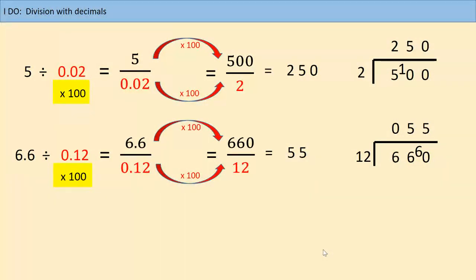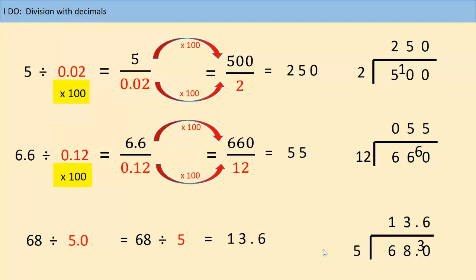Let's look at the third example, which might catch you out: 68 divided by 5.0. Now, 5.0 has one decimal place, but do I need to multiply by 10? I don't, because 5.0 is exactly the same as 5 on its own. And 68 divided by 5 we can easily do — we get the answer 13.6. So I don't have to make it any more complicated. It's okay to have a decimal on the top of my fraction — my numerator — but I must always have an integer, a whole number, that I am dividing by. The number on the outside of the bus stop always has to be an integer.